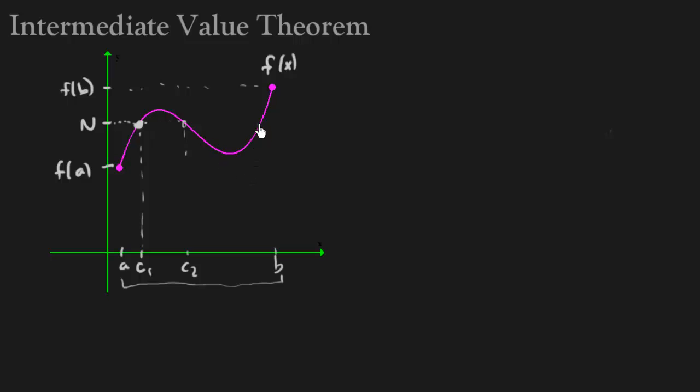Now it looks like I have three, but again, the intermediate value theorem just guarantees one. Now that's true for any single y value I pick. So if I pick this y value, well, that would be right here. And if you come down, that will be an x value between a and b.